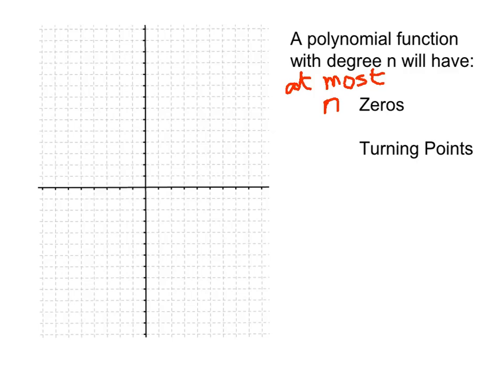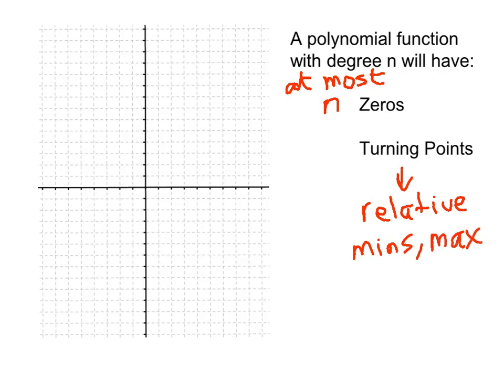Also, with the turning points — which we also know as relative mins and maxes — those are just the tops of hills and the bottoms of the valleys, the tops and bottoms of those round bumps. And if you know the degree is n, your polynomial function can have, at a maximum, n minus 1 turning points.